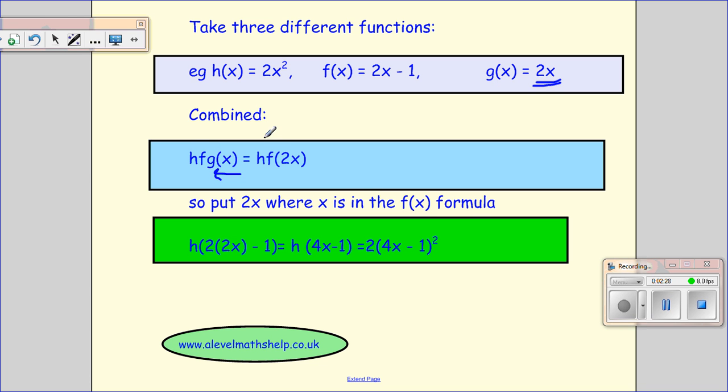So we're going to have h acting on f, where the input for f is 2x. So we're going to look at what our f of x is. And where we see x here, we're going to write 2x.